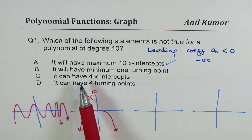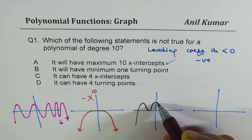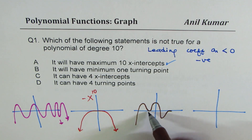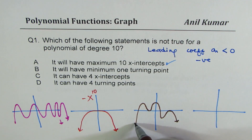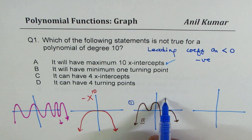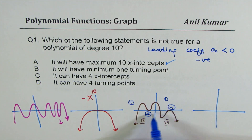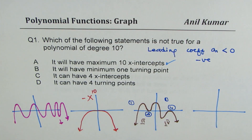Next, it can have 4 x-intercepts. That's easy to sketch: 4 x-intercepts. The graph goes from quadrant 2 to quadrant 4. The only thing to worry about is the degree. For example, two factors could each be of order 4, giving degree 8, plus 1 and 1 equals 10. So you could have 4 x-intercepts — that is correct.